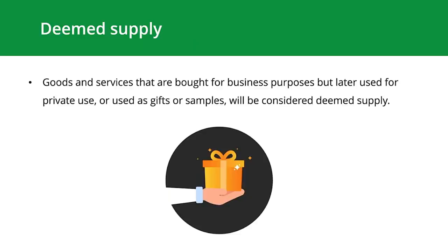Deemed supply: in a typical scenario, Ahmed would buy some goods, sell them to a customer, and the customer pays him. Ahmed can recover the VAT incurred on purchases and account for the output VAT borne by the customer. But in the case of deemed supply, it varies. Ahmed buys the goods, recovers the input tax paid on the purchase, and gives the goods to his customer for free. So the customer has the goods but nobody has paid VAT which was due on the supply. Goods and services that are brought for business purposes but later used for private use or as gifts or samples are called deemed supplies.